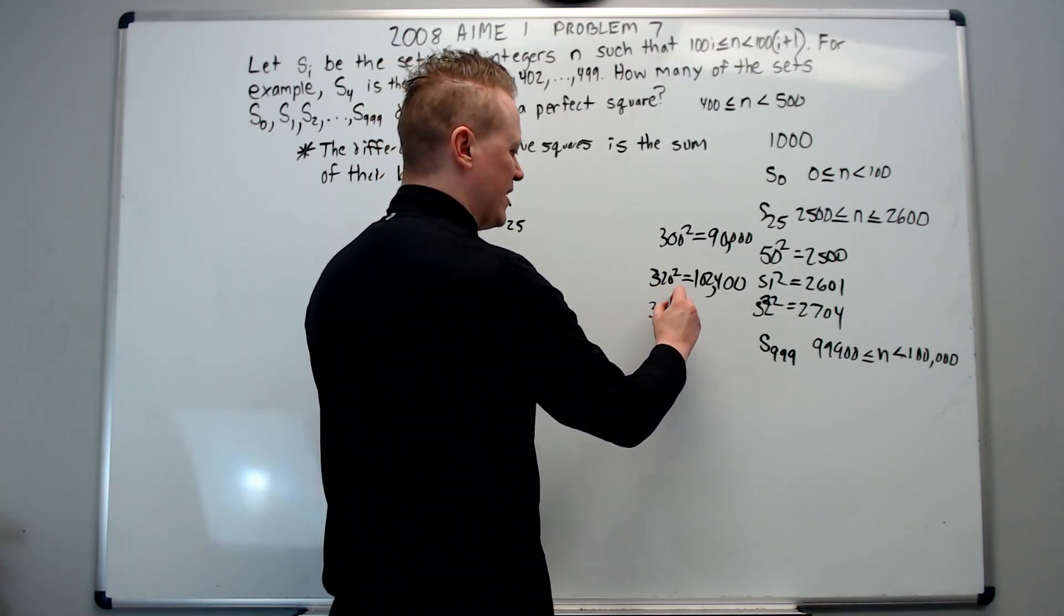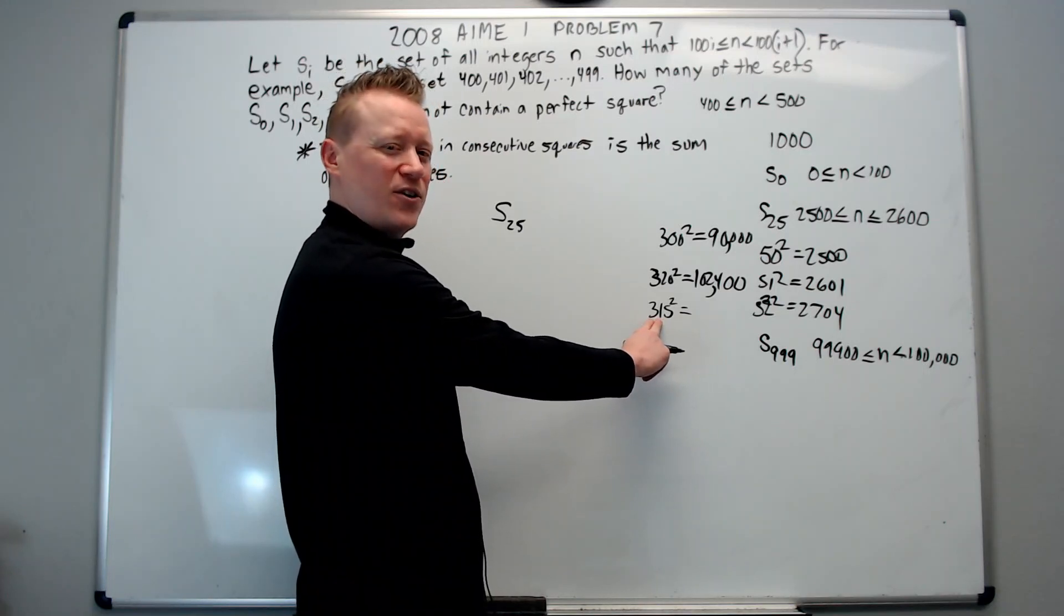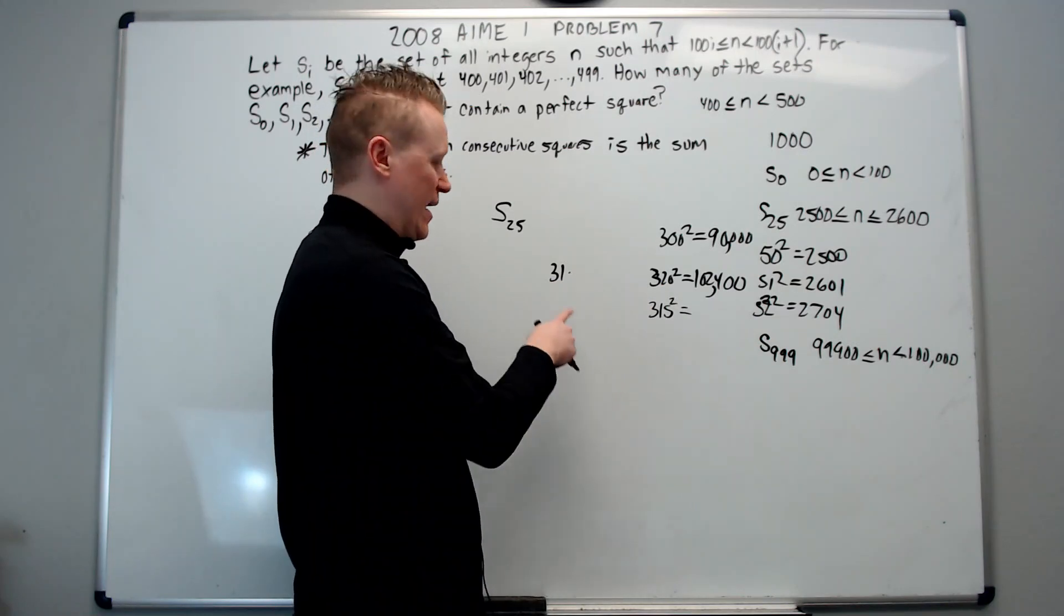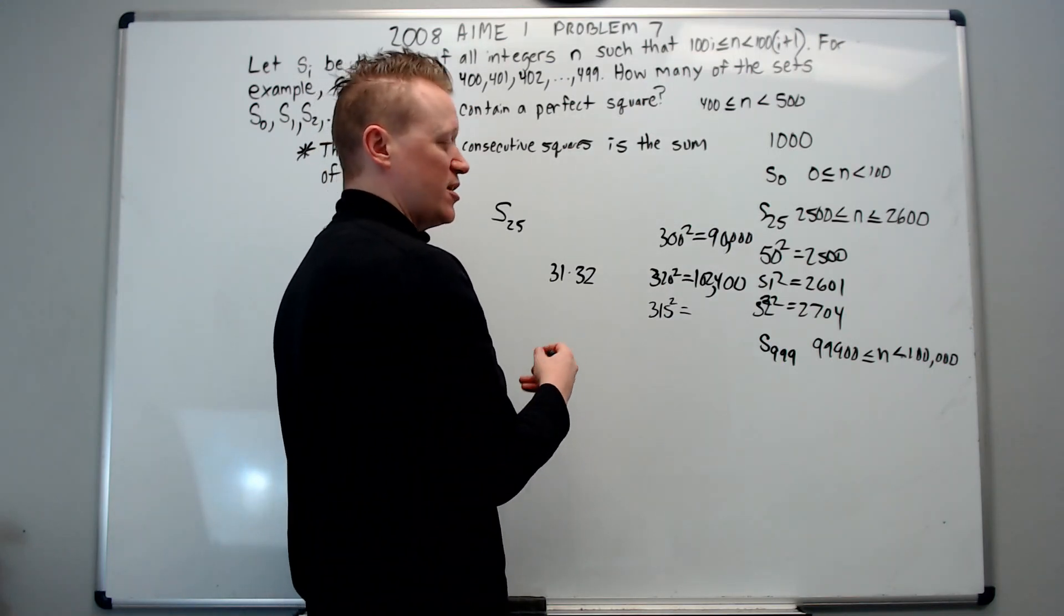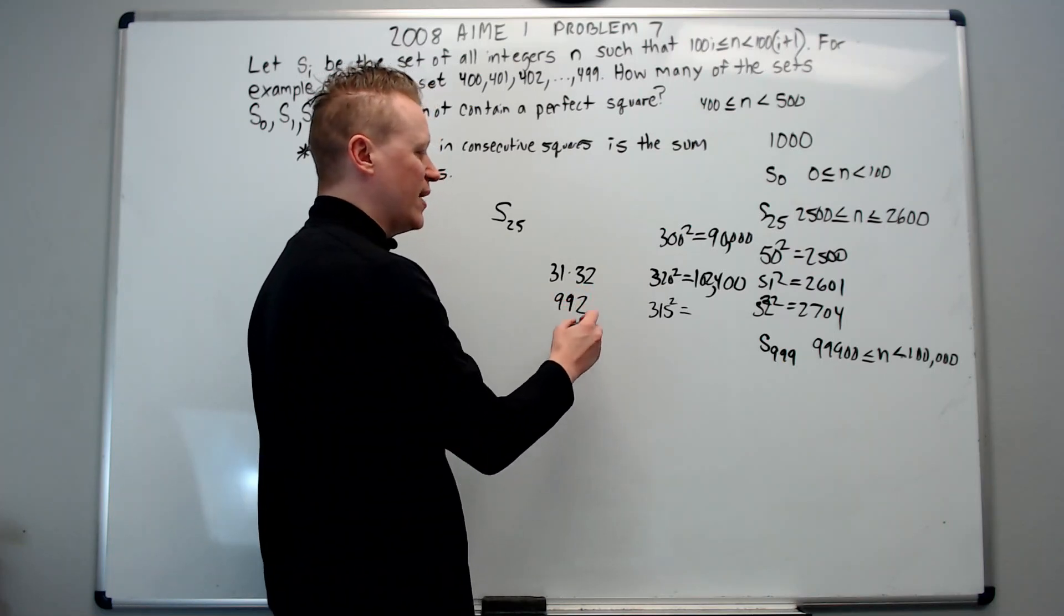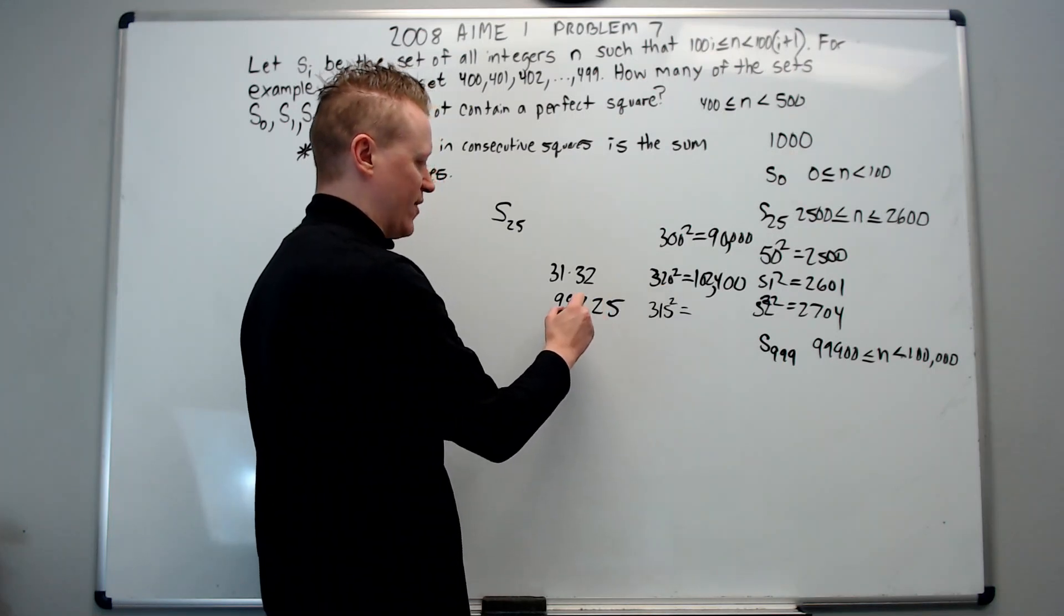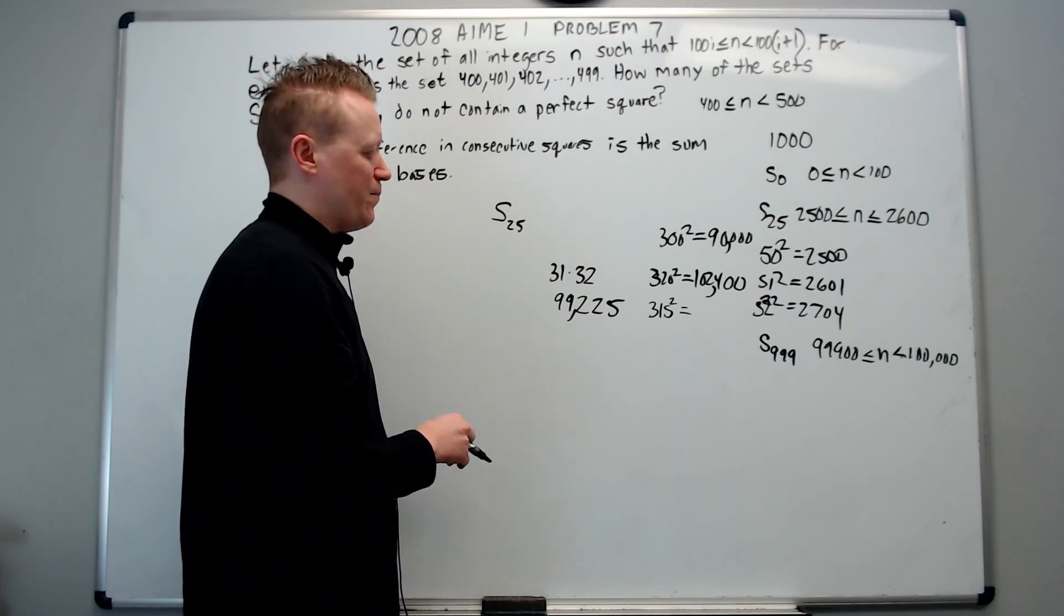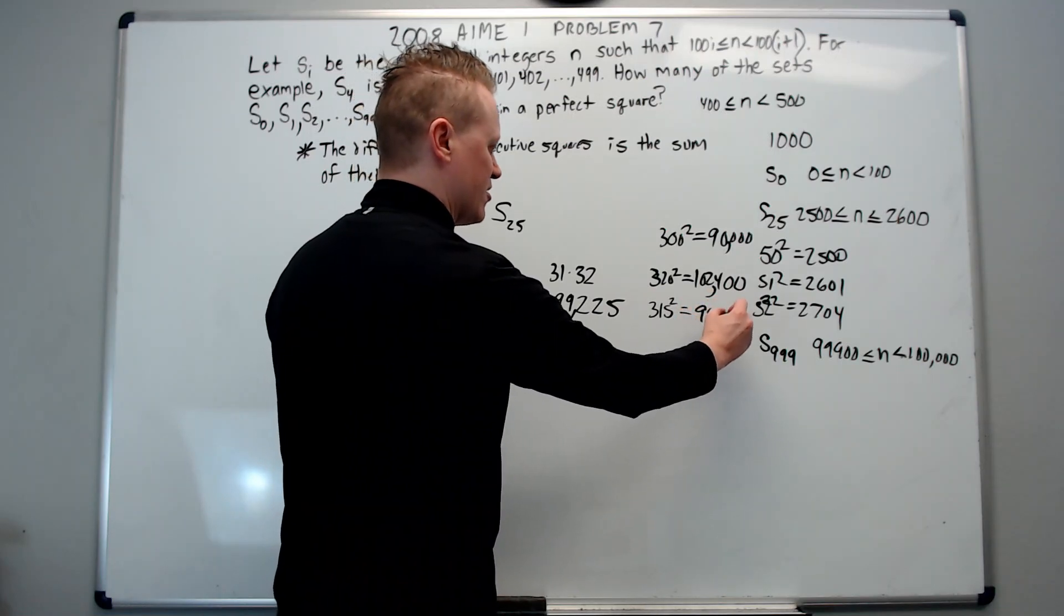Let's go for 315 squared. Again, things that end in 5 when you square them, you can take their first two digits, 31, and multiply it by the next two-digit number after this, or one-digit number, and you'll get 31 times 32, which is 31 squared plus another 31. It's 992. And then you take the 5 from the end, and you turn it into 25. So you get 99,225 is this square right here, 99,225.